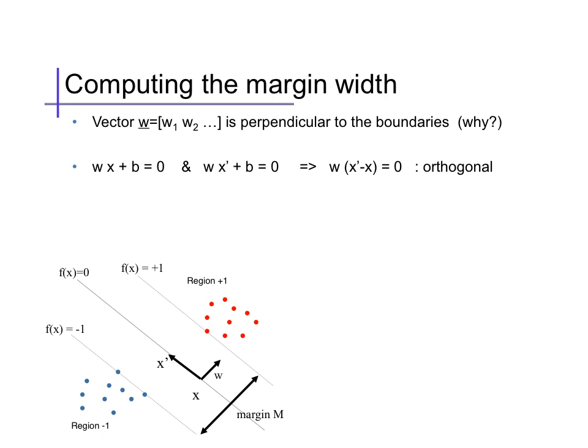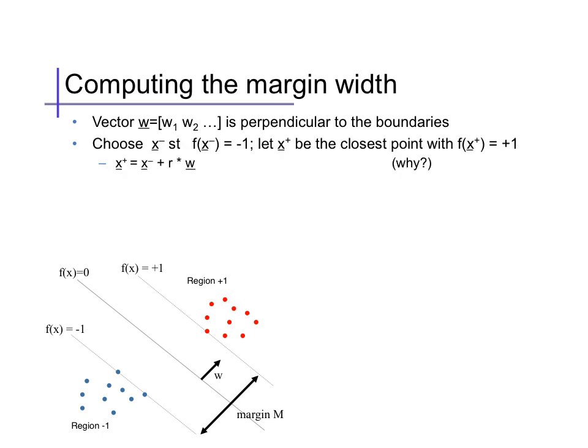To see this quickly, just note for any two points x and x prime that are both on the boundary, the linear response is zero. So rearranging these equations, we see that w and the vector x prime minus x, which lies along the boundary, are perpendicular.